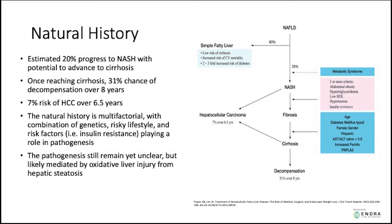Twenty percent of the NAFLD population can develop non-alcoholic steatohepatitis, which is the more severe form of NAFLD. In these patients, there is an increased risk of cirrhosis, which can result in liver decompensation with liver failure and hepatocellular carcinoma. There is a 30% chance of liver failure and decompensation over eight years once cirrhosis is reached in NAFLD, and also a 7% risk of hepatocellular carcinoma after 6.5 years.